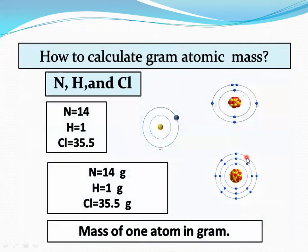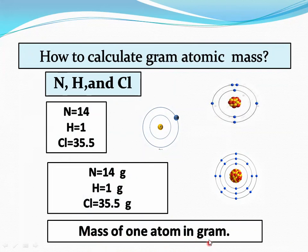How to calculate gram atomic mass: observe the diagram — nitrogen 14 AMU, hydrogen 1 AMU, chlorine 35.5 AMU. The mass of one atom expressed in grams is known as the gram atomic mass of that specific element. So nitrogen gram atomic mass is 14 grams, hydrogen is 1 gram, and chlorine is 35.5 grams.